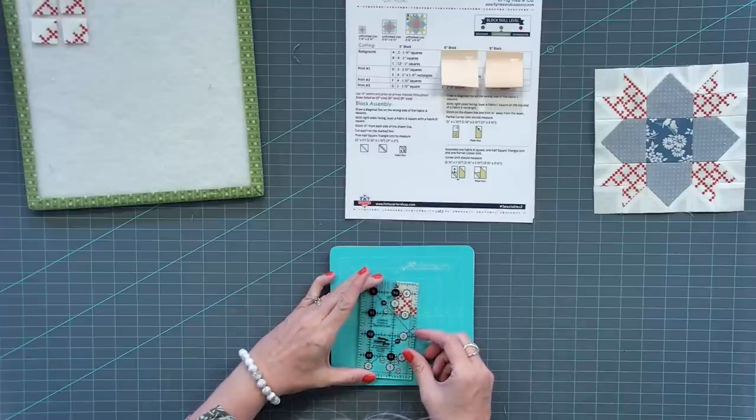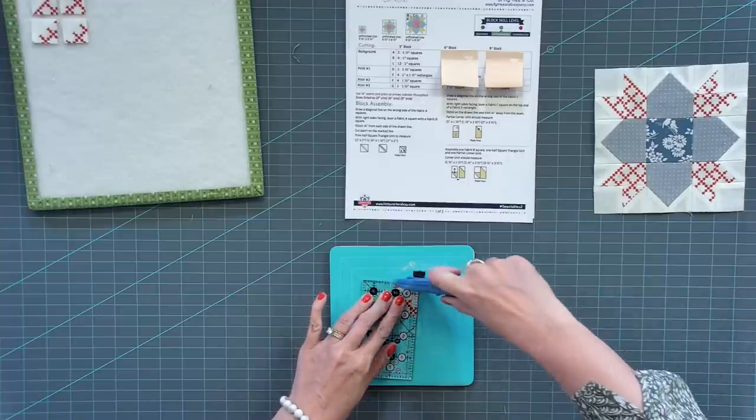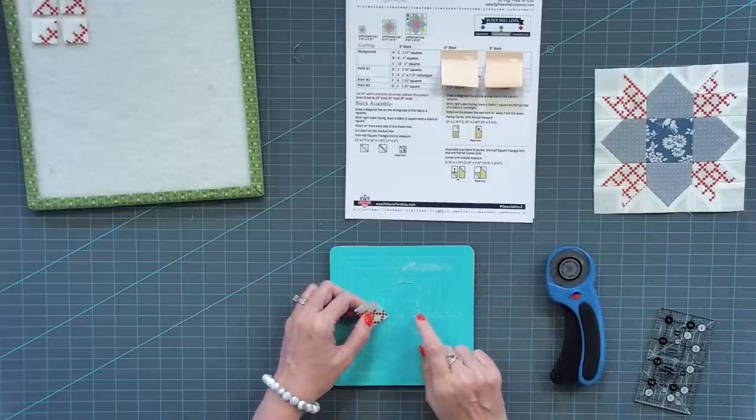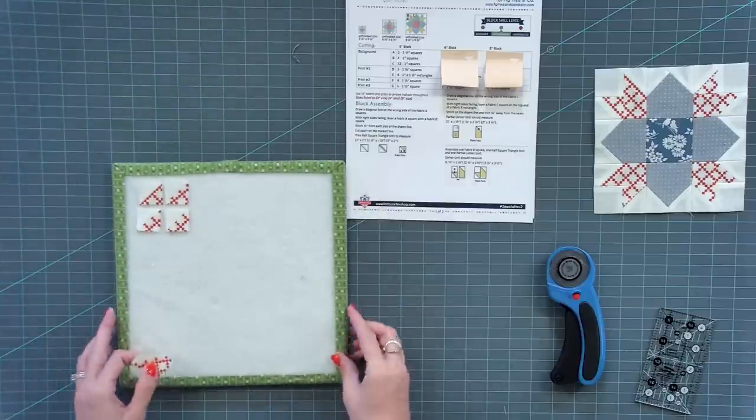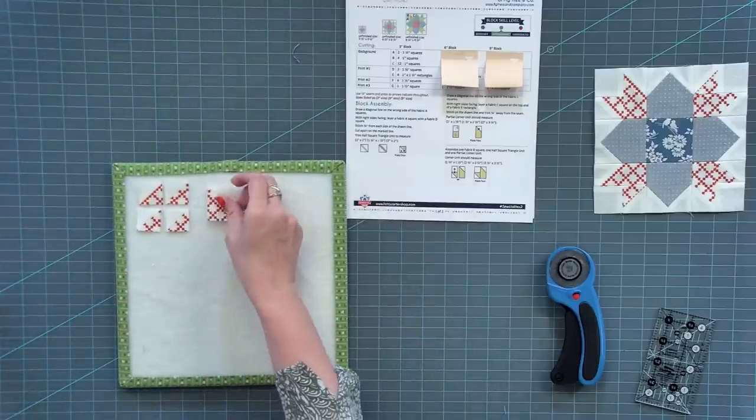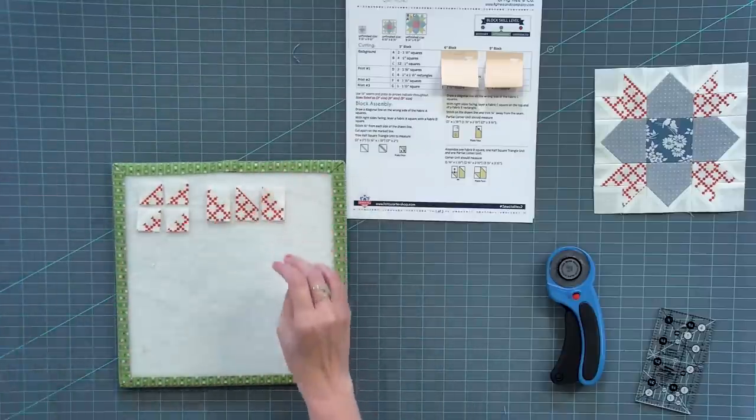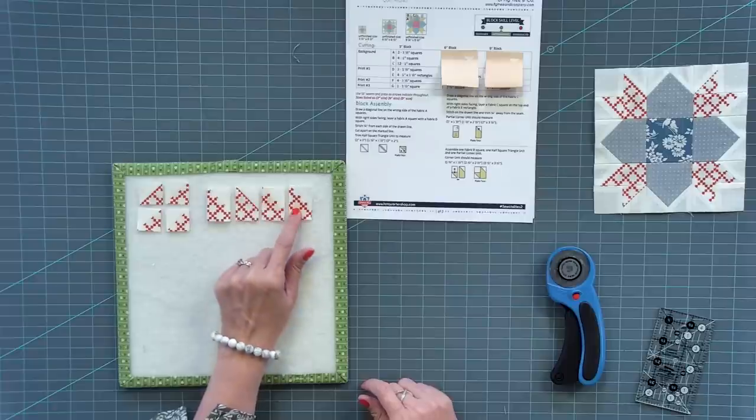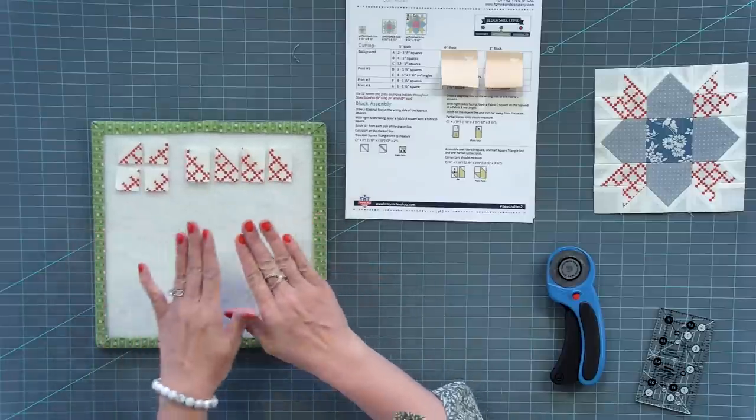Make sure that square is just right on there. We're gonna stitch directly on the line this time, not to any side, just right on that line. I'm gonna trim a quarter inch away and press. Now, what I like to do on anything that has a corner square is just put your ruler on here and trim that corner. I know it's just tiny, but it's gonna make a big difference. Just getting that little tiny bit off is going to help. You're gonna make four of these.